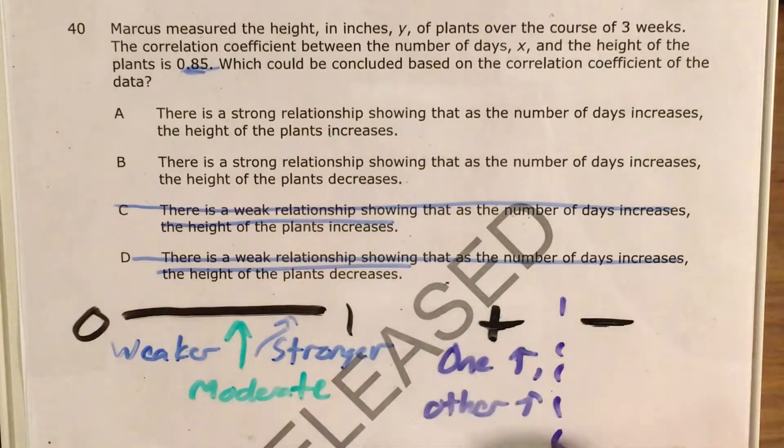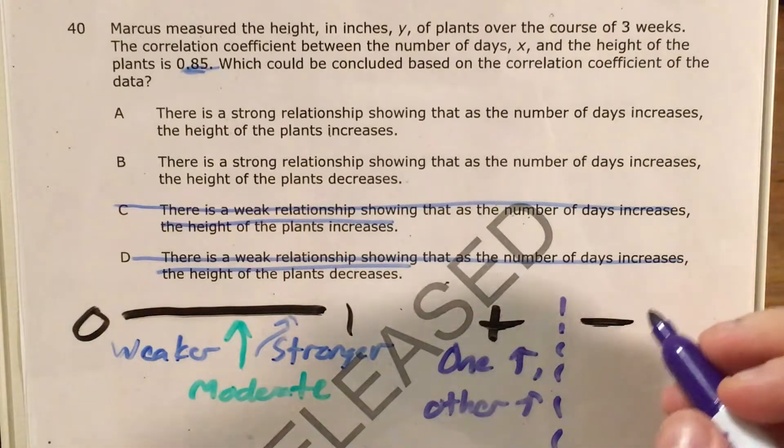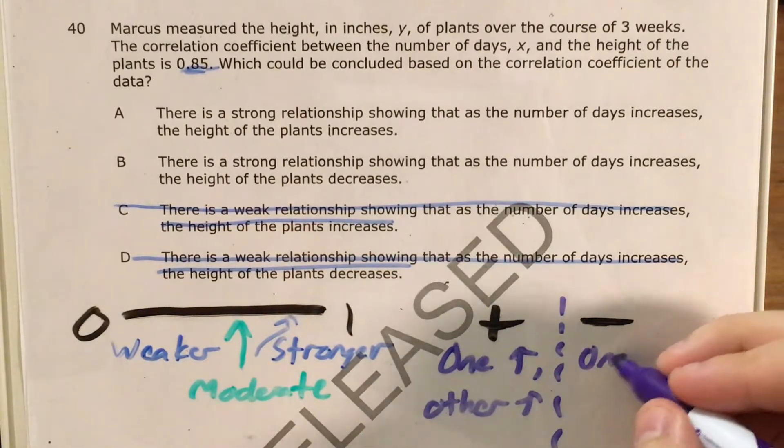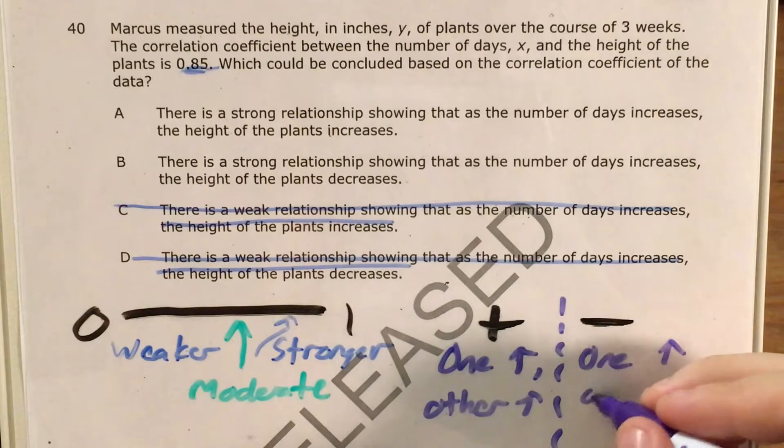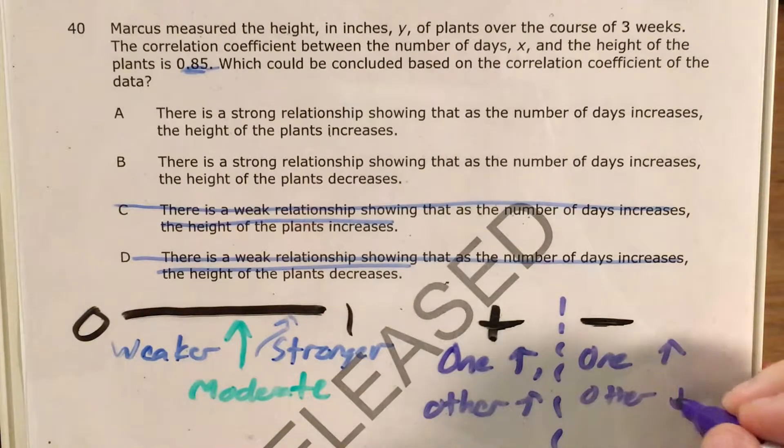Whereas a negative relationship or a negative association or correlation says that as one goes up, the other goes down.